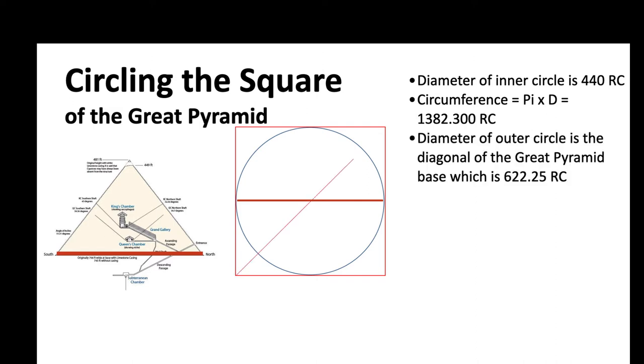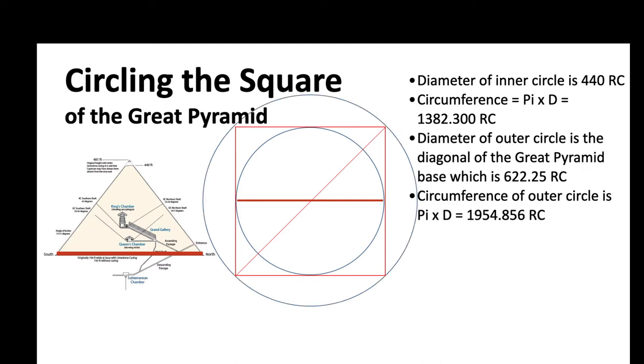Now we take the diagonal of the Great Pyramid, which is 622 royal cubits, and use that as the diameter of another circle. This one will be exoscribed around the Great Pyramid.